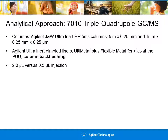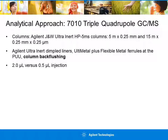As mentioned earlier, QuEChERS sample preparation allows for the extraction of compounds from complex matrices, but does not exhaustively remove all contaminants. Hence, backflushing the GC columns ensures that high-boiling compounds in the matrix are not passed through the column, reduces column bleed, eliminates ghost peaks, and minimizes contamination of the mass spectrometer. This technique, coupled with the ultra-efficient ionization source in the 7010 triple quadrupole GC-MS/MS, allows for smaller injection volumes while still achieving low sensitivity of target analytes.